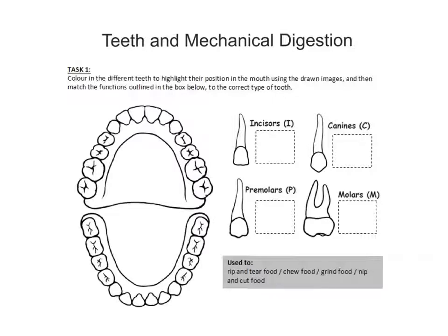Let's put the incisors in place — I'll use red. Thinking about upper jaw at the top and lower jaw at the bottom, these top four teeth are our incisors, and equally the bottom four are incisors. In the specification you would be asked to identify the different types of teeth, which is why this is our first task.